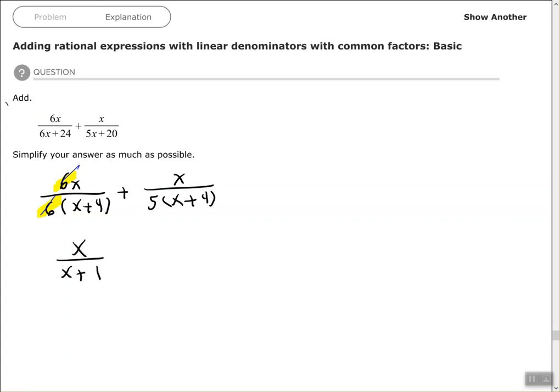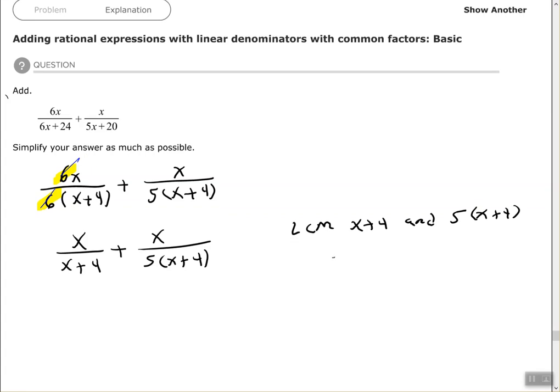Now let's find the least common denominator or least common multiple of our denominators: x plus 4 and 5 times x plus 4. The least common multiple must have a 5 and must include the x plus 4.